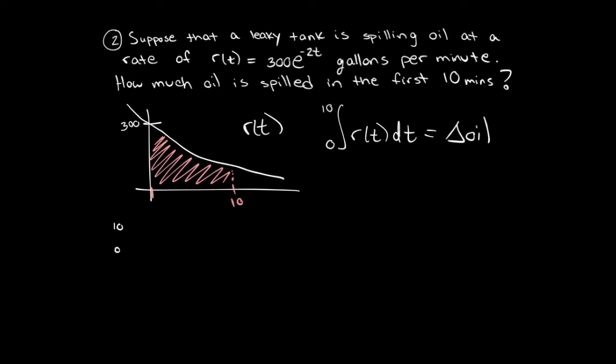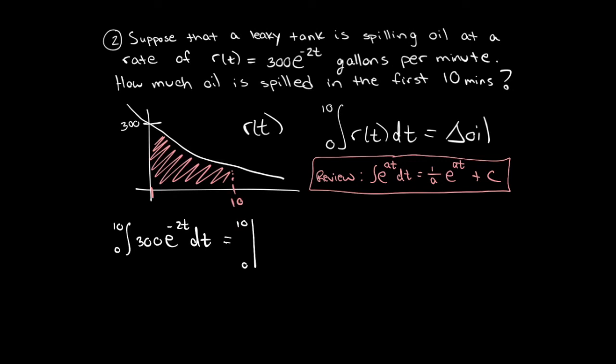Alright, so let's calculate the definite integral using the fundamental theorem of calculus. Remember, in class, we had that the antiderivative of e to the a t dt is equal to 1 over a e to the a t plus c. Look back in your notes from class for that formula. So the antiderivative here, using the a value of negative 2, we get 300 times 1 over negative 2 e to the minus 2.